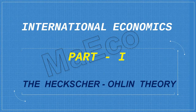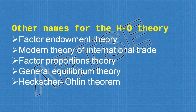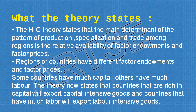Bertil Ohlin, in his famous book Inter-Regional and International Trade, criticized the classical theory of international trade and formulated the general equilibrium theory. It was Eli Heckscher, Ohlin's teacher, who first founded the idea in 1919 that trade results from differences in factor endowments in different countries, and Ohlin carried it forward to build the modern theory of international trade. The HO theory is also known by other names such as the factor endowment theory, modern theory of international trade, factor proportions theory, general equilibrium theory, and the Heckscher-Ohlin theorem.